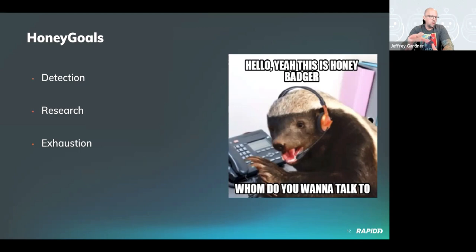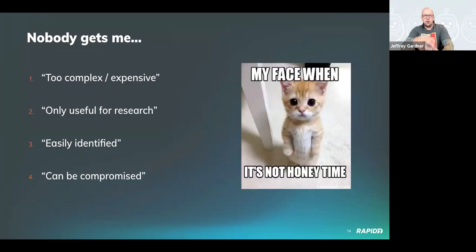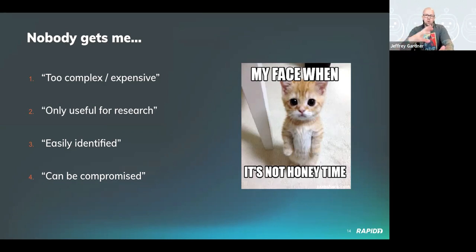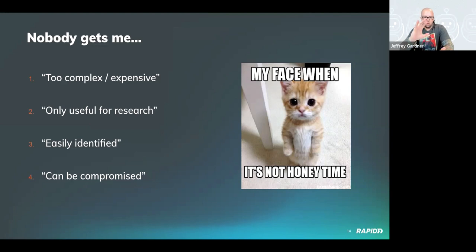All of this sounds amazing, but there are a number of objections to utilizing deception technology. 'Too complex, too expensive' is a common one — and while that may be true for some higher-interaction honey things, the majority like honey files, honey credentials, and honey users are very low interaction, deployed on small servers with limited resources using simple programs or even scripts. 'Only useful for research' — again true for research systems, but low-interaction systems placed in production networks are a great high-fidelity detection mechanism.